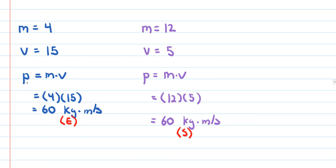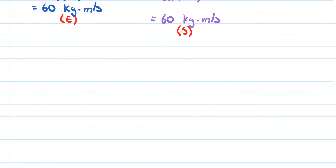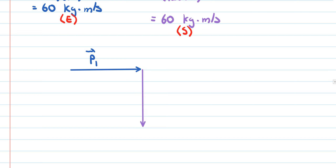I'll label these P1 and P2. Since these two objects stick together, we want to find the resulting speed of the combined objects. Let's create a vector diagram. P1 goes in the east direction and P2 goes south, and then we want to find the resultant of the combined objects drawn head to tail.